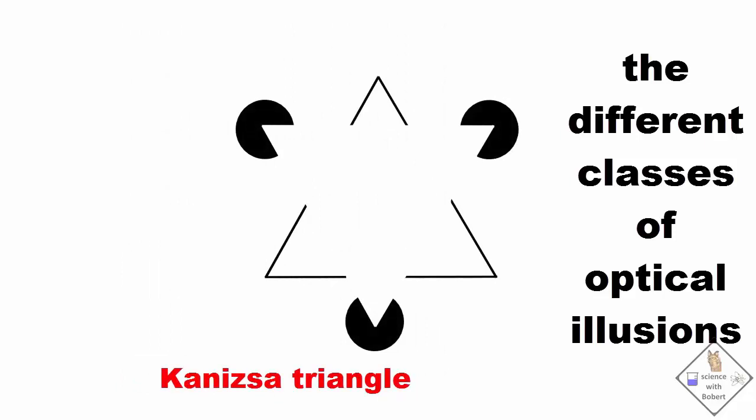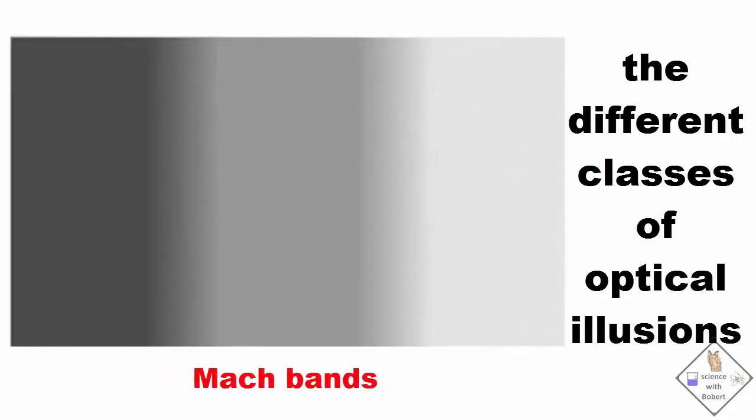This is a Kanizsa triangle. We perceive a white triangle where nothing is drawn. Do you see thin lines or bands along the gradient? If you do, they aren't actually there. They are called Mach bands.